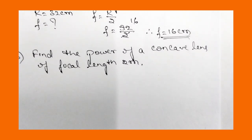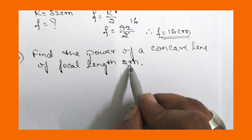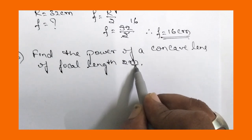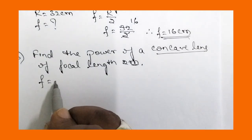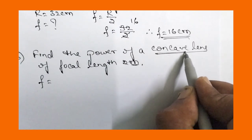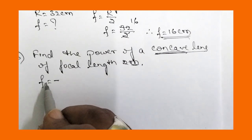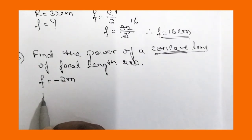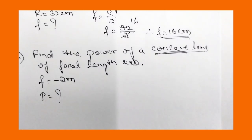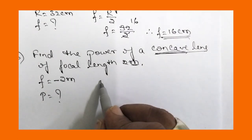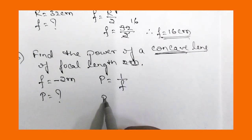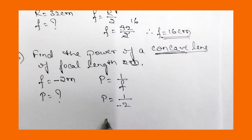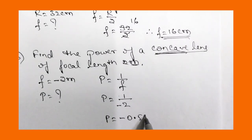Now let us move to the third question: find the power of a concave lens of focal length 2 meters. For a concave lens, the focal length is negative, so f equals minus 2 meters. The relationship between power of the lens and focal length is: power equals 1 divided by f. So P equals 1 divided by minus 2, which gives minus 0.5 diopter. Note that focal length must be in meters when calculating power.